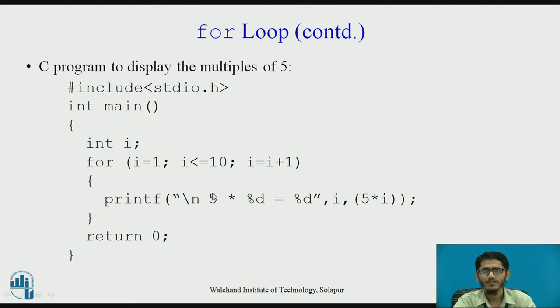This process goes on continuing as long as the value of i is less than equal to 10. Every time, the value of i is incremented by 1, the condition is checked, and the looping statements would be executed. This is how the for loop works. This indicates the end of the loop, and at the end we have the return statement that concludes the main function.